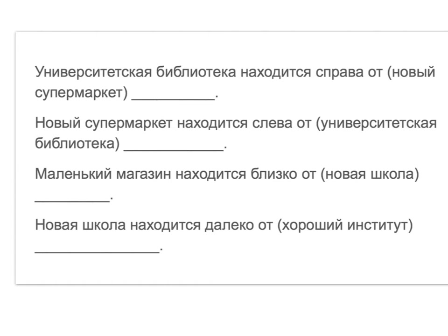Try these. Университетская библиотека находится справа от нового супермаркета. Супермаркет is masculine, so we have ОВА and А.